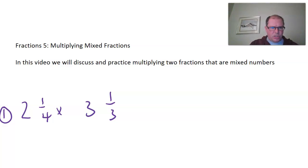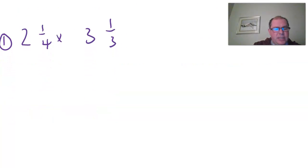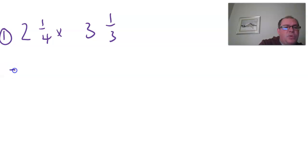So like in question one there, two and a quarter times three and one third. Now my advice when you're doing this is just to change them into what I call top heavy fractions or improper fractions.